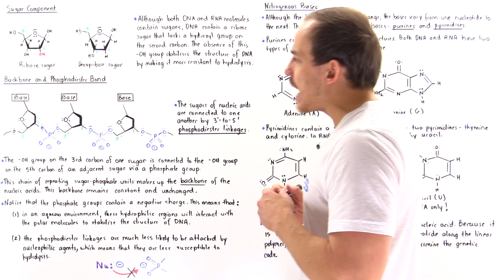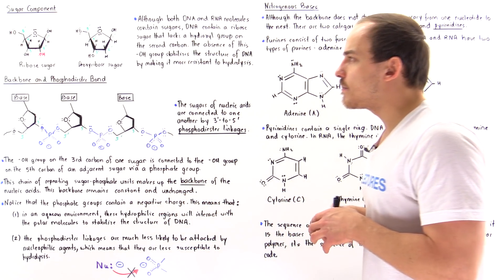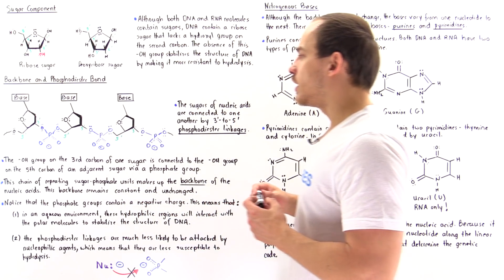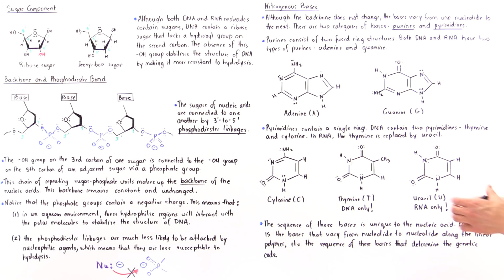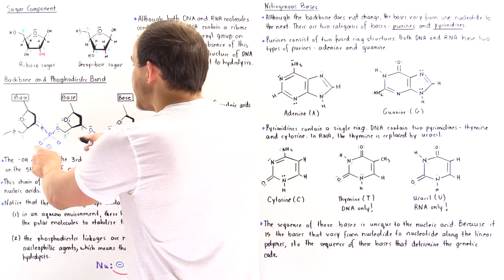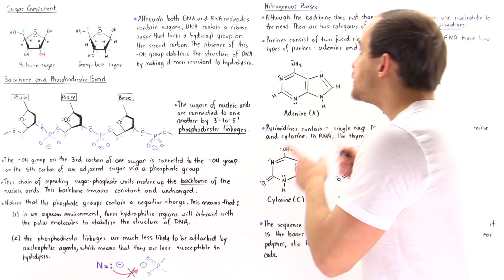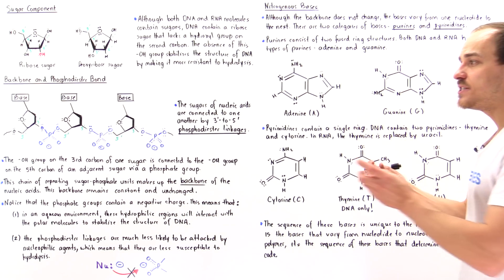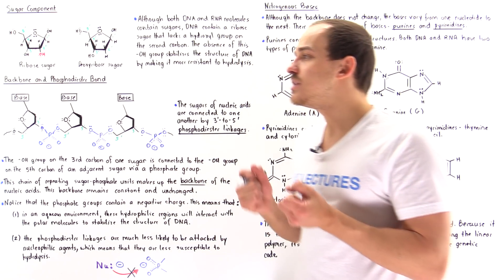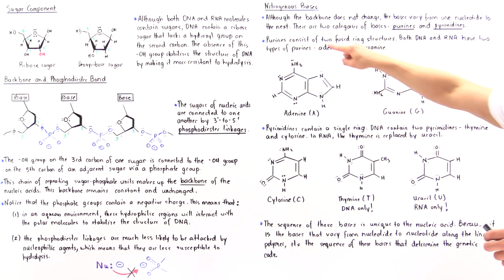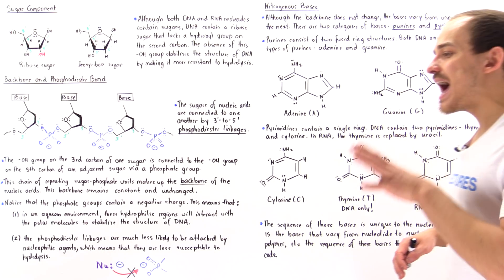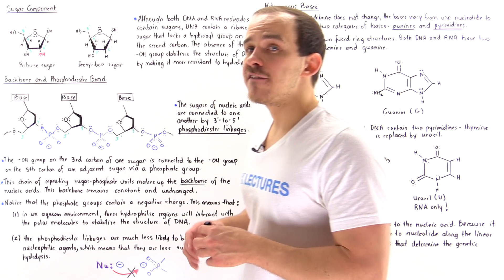The final component to discuss are the bases. Any nucleotide consists of a phosphate group, a sugar molecule, and a base. Unlike the backbone, which repeats throughout the entire nucleic acid, these bases do change from one nucleotide to another — and that is exactly what allows the DNA to ultimately store genetic information. There are two categories of bases: purines and pyrimidines.